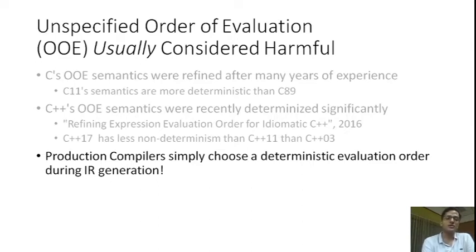Production compilers like GCC, LLVM, and ICC simply choose a deterministic evaluation order at a very early stage of the compilation pipeline, namely IR generation.